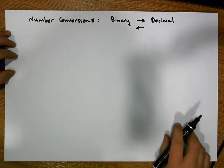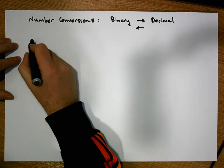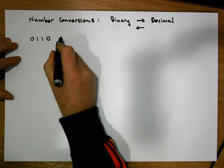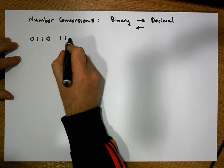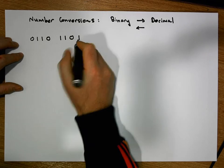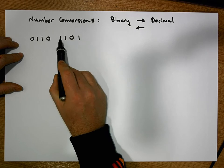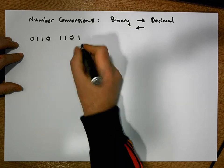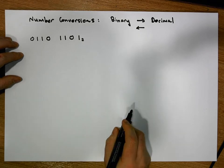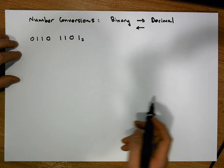Let's consider a binary number — the number 01101101. This is an 8-bit binary number; there are 8 bits: 1, 2, 3, 4, 5, 6, 7, 8. This binary number is said to be in base 2, so we usually put a small subscript 2.